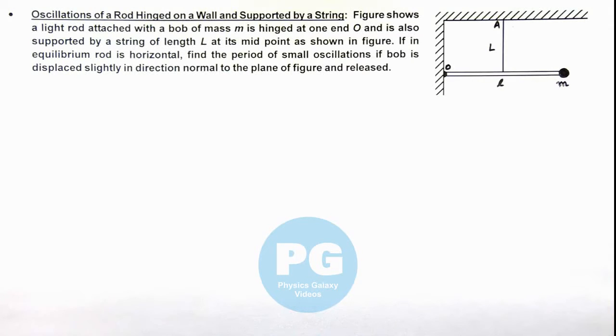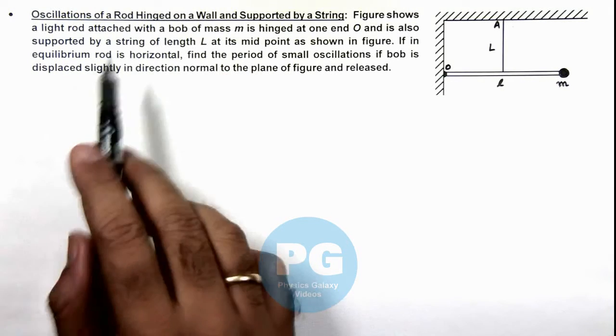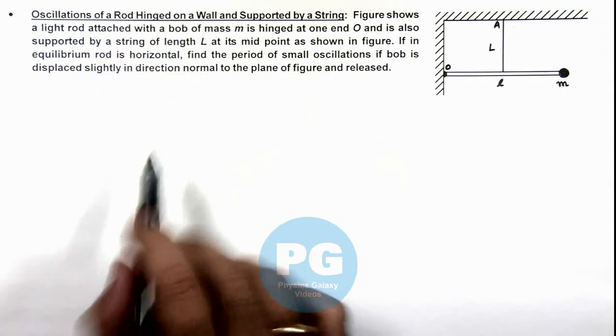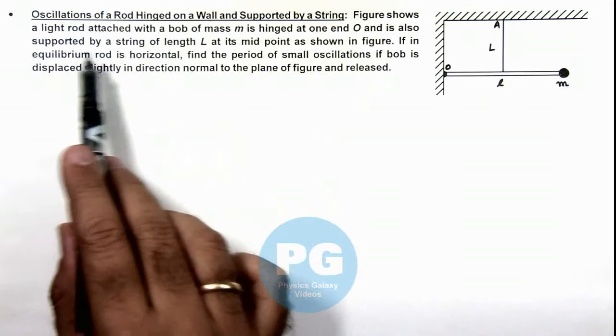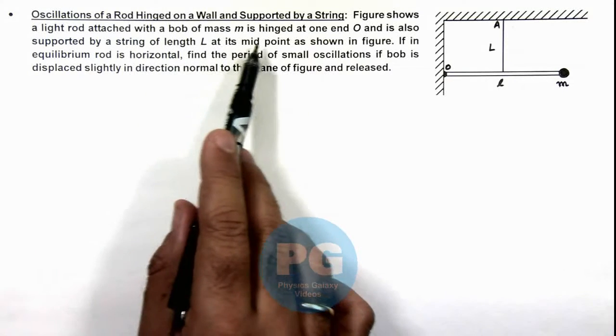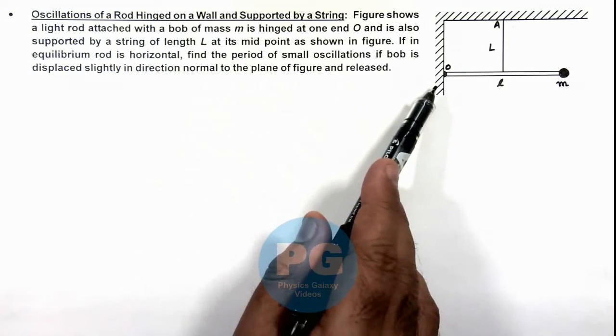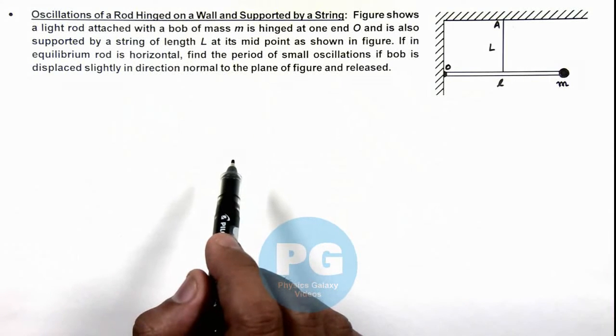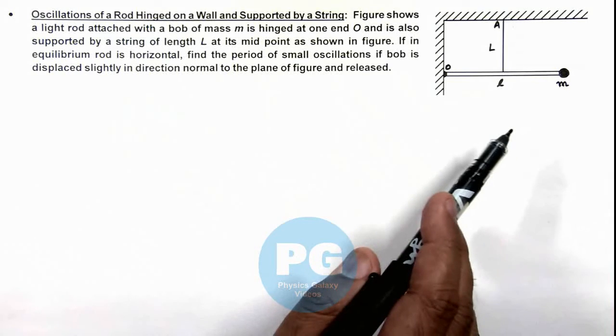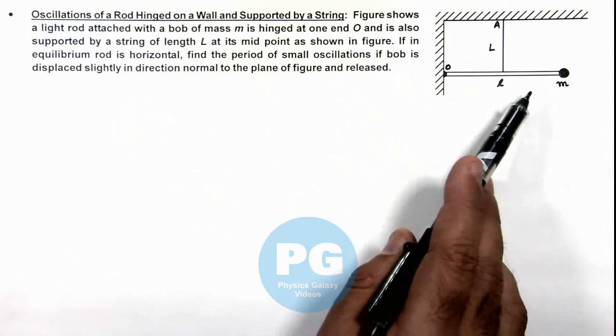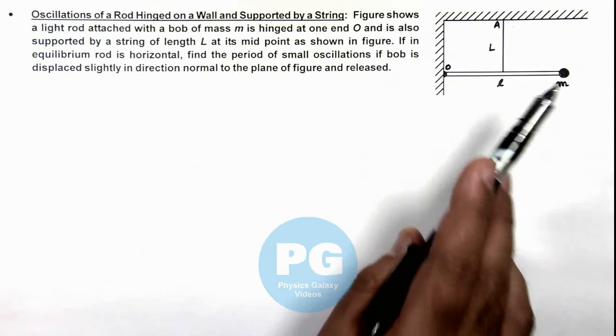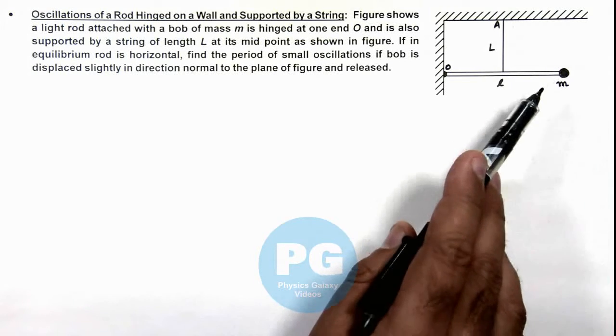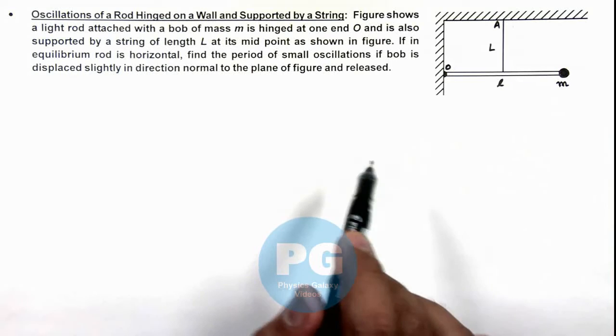In this illustration we'll discuss the oscillations of a rod hinged on a wall and supported by a string. The figure shows a light rod attached with a bob of mass m, hinged at one end O, and supported by a string of length L at its midpoint. If the rod is slightly displaced in the direction perpendicular to the plane of the figure, we are required to find the oscillations of this system.